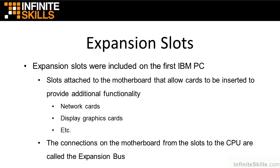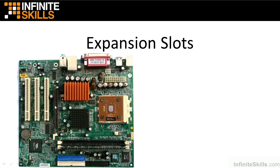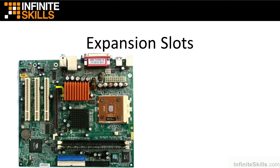The connections on the motherboard from those expansion slots to the CPU are called the expansion bus, because it buses data from the expansion cards. Right here you can see three PCI expansion slots, and if you zoom in you'll notice little pathways from here to various other aspects on the motherboard, allowing whatever functionality is happening on these expansion cards to be communicated to the CPU — and in some cases other parts of the motherboard, like the north bridge, the south bridge. This slot right here is used for video.